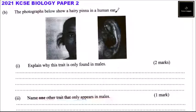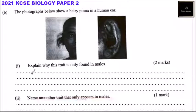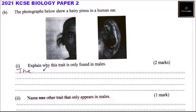Part B. The photograph below shows a hairy pinna in a human ear. The pinna is the outer part of the ear, as shown here. Roman numeral one: explain why this trait is only found in males. The reason is that it is sex-linked — the gene that causes this is found on the Y chromosome, and males are the ones that have Y and X chromosomes, while females have XX chromosomes. That is why it's only found in males.